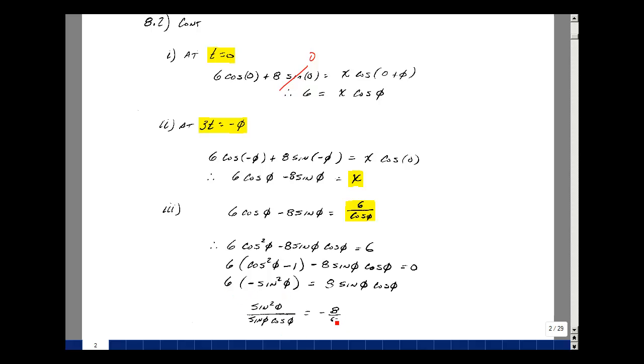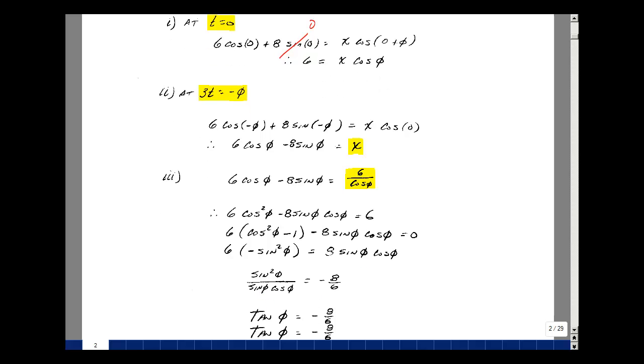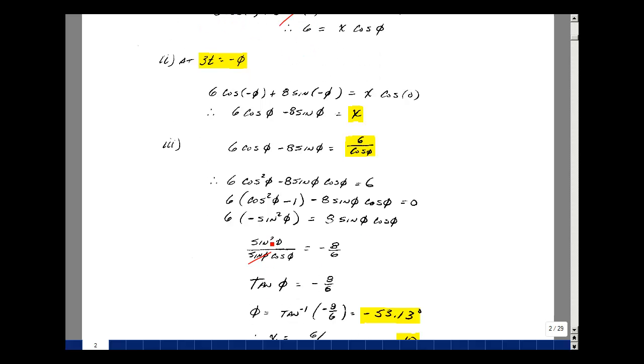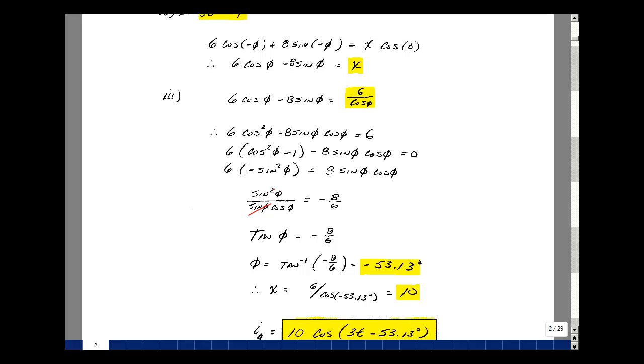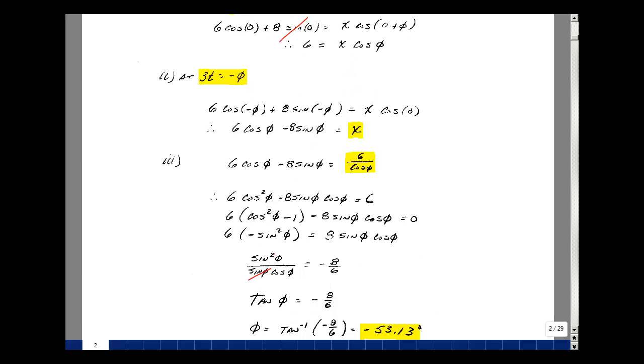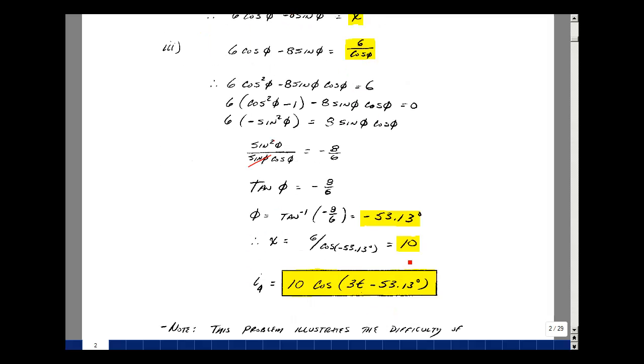Bring the 6 over and divide through by sine phi cosine phi. One of the sines cancels, and I get sine over cosine, which is tangent of minus 8 sixths. Taking the arctangent, I get minus 53.13 degrees. I can go back and find x from the expression. x is 6 divided by cosine of phi, and that equals 10.